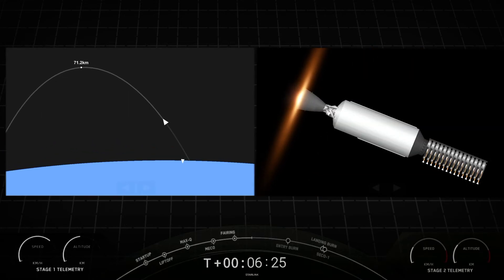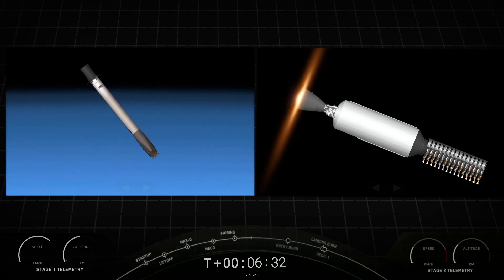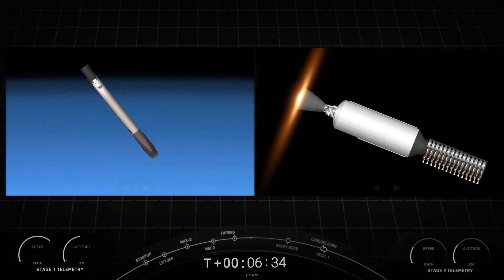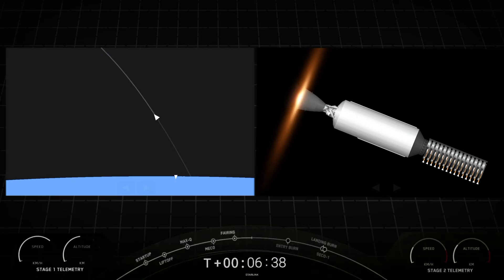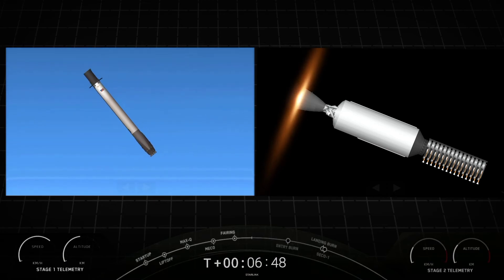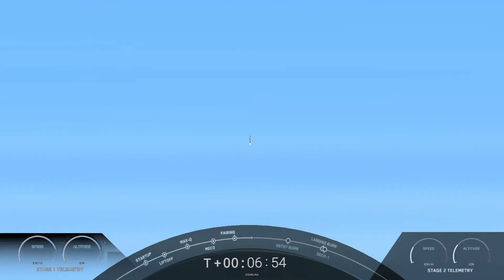And we are just about a minute away from the landing burn beginning on the first stage. Again, as I mentioned, the atmosphere helps to scrub a lot of the velocity as first stage makes its way back to the landing zone after the entry burn has concluded. And we got a great view here of the second stage.